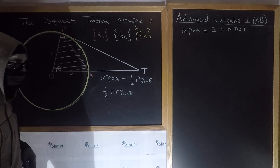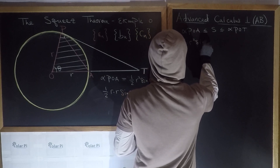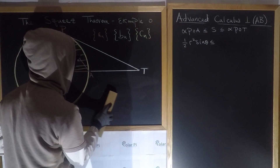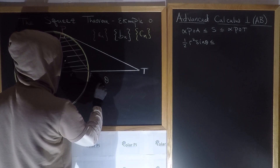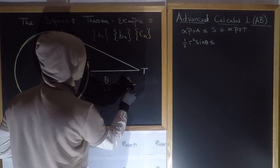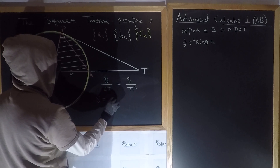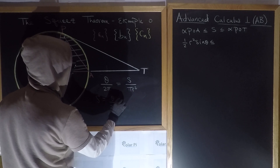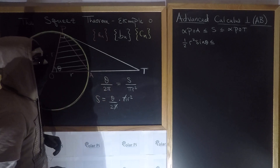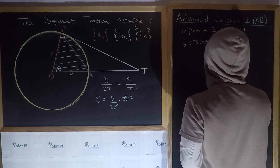Next is the area of the sector. We know that theta over 2pi — this portion over the whole — must be in equal proportion to the sector's area over pi R squared. Multiplying both sides by pi R squared, the sector S must have area theta over 2pi times pi R squared. After canceling, we get one-half theta R squared for the area of the sector.